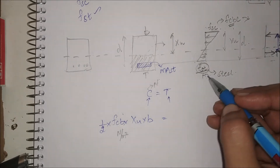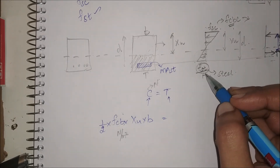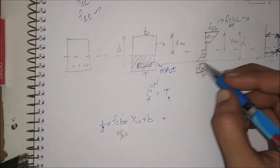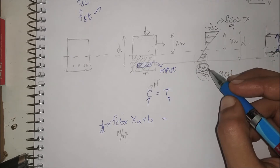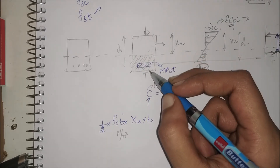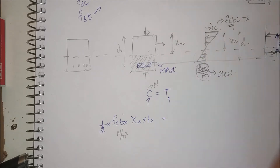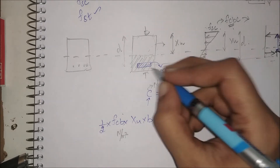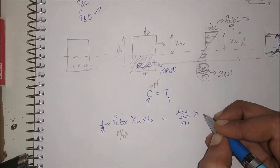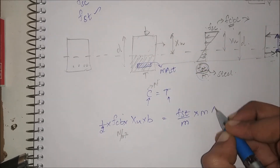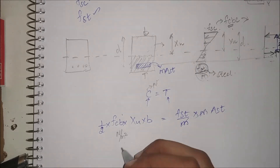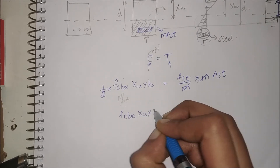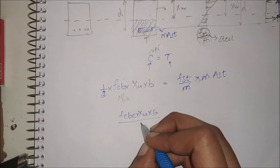Coming to T — I don't have any problem here because I already know the area of steel, which is AST, and I have the stress of steel. I don't need to worry about the concrete part here. So T equals the stress FST divided by M, multiplied by the area M times AST. M cancels, giving T equals FST times AST.